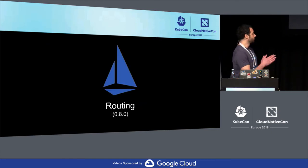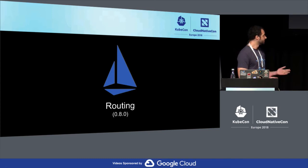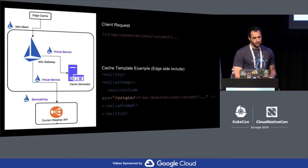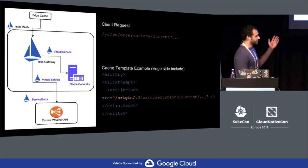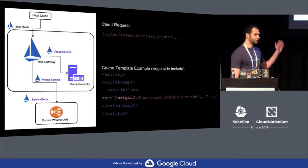I'm going to talk about routing. This is for the 0.8 version which should be cut in the next week or two. It has a lot of functionality that we helped work on and test so we could run our workload. Walking through a simple example for current weather: traffic comes in through our edge cache and hits the Istio gateway. The gateway decides where that request gets routed — we intercept it and send it to our cache generator, then that goes back to the edge cache. If it needs to retrieve data, it goes back through the gateway to the current weather API.